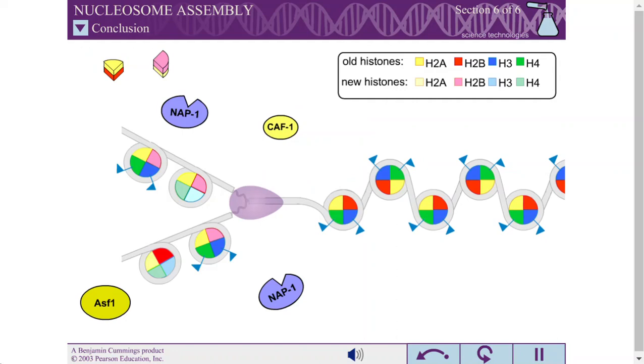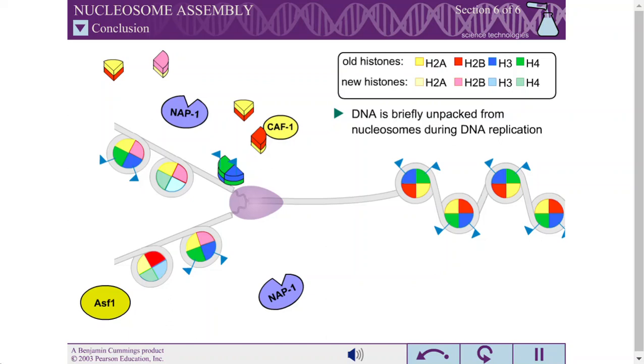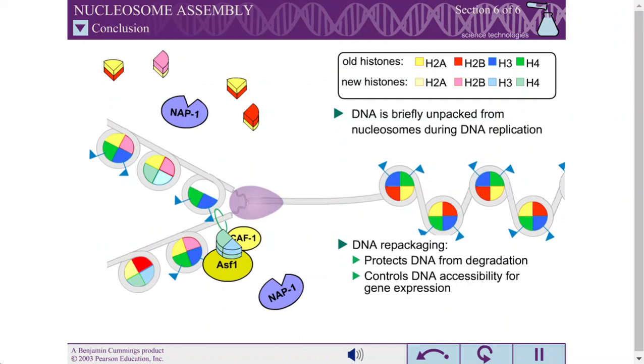During replication, DNA is briefly unpacked from nucleosomes. Once copied, the new DNA is quickly repackaged to protect it from degradation and to control DNA accessibility for gene expression.